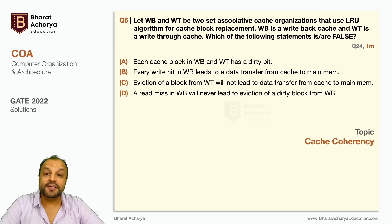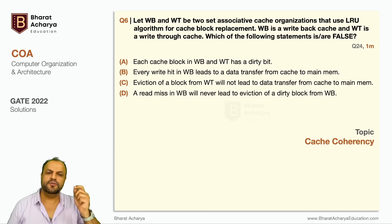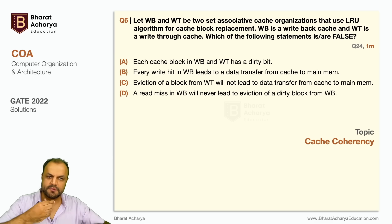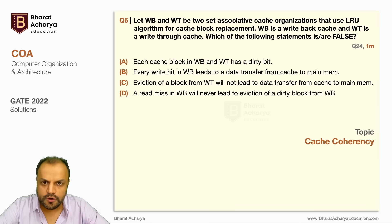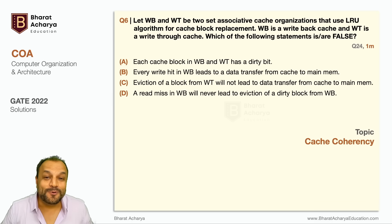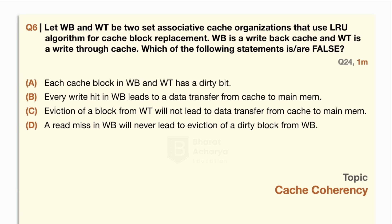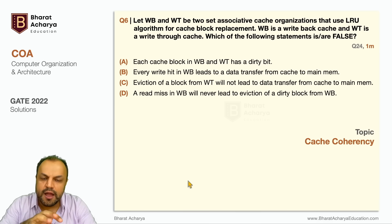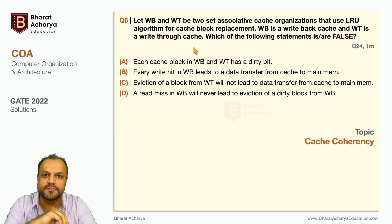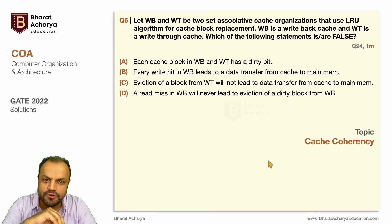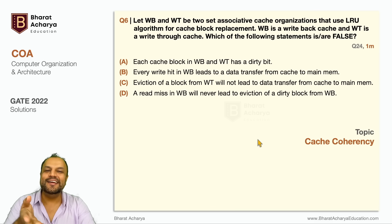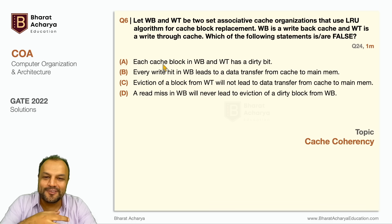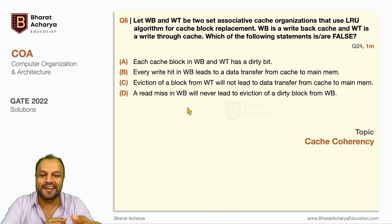The next one is a theory question on cache — cache consistency, maintaining the same data in cache memory and main memory. There are two approaches: WT (write-through) and WB (write-back). In write-through, the processor updates both. In write-back, the processor updates only cache memory and the cache controller updates the main memory. I'll show you the diagram and how both caches work. Without even touching the options, as you read the statements, the answers will come out instantly.